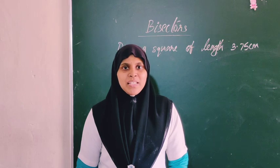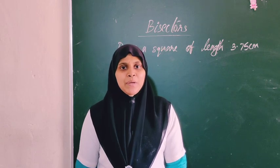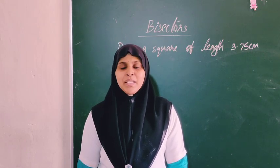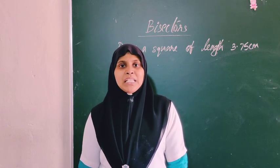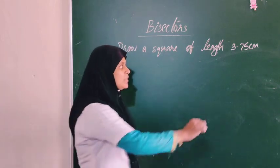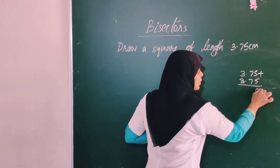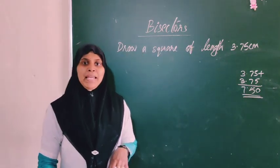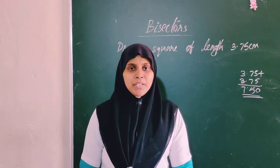The next question is: draw a line of length 3.75 cm and draw its perpendicular bisector. We need to use compass arcs. The midpoint of 3.75 is not a whole number. We take more than half of the line with the compass. 3.75 plus 3.75 is 7.5, so the full line length is 7.5.